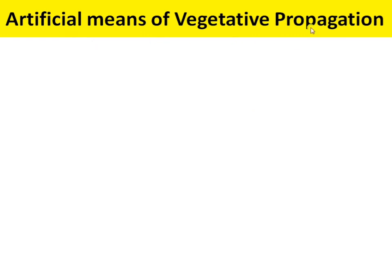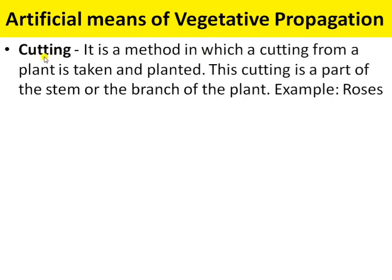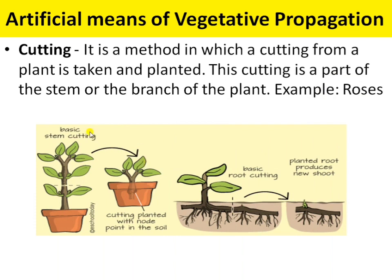Next is the artificial means of vegetative propagation. In cutting, it is the method of artificial vegetative propagation in which a cutting from a plant is taken and then planted. This cutting is a part of a stem or branch of the plant — for example, rose. When we cut the stem or branch of the rose plant and grow that cut branch with the cut end into the soil, after some time, several roots grow from that branch. These planted roots produce a new shoot and it grows into a new rose plant.